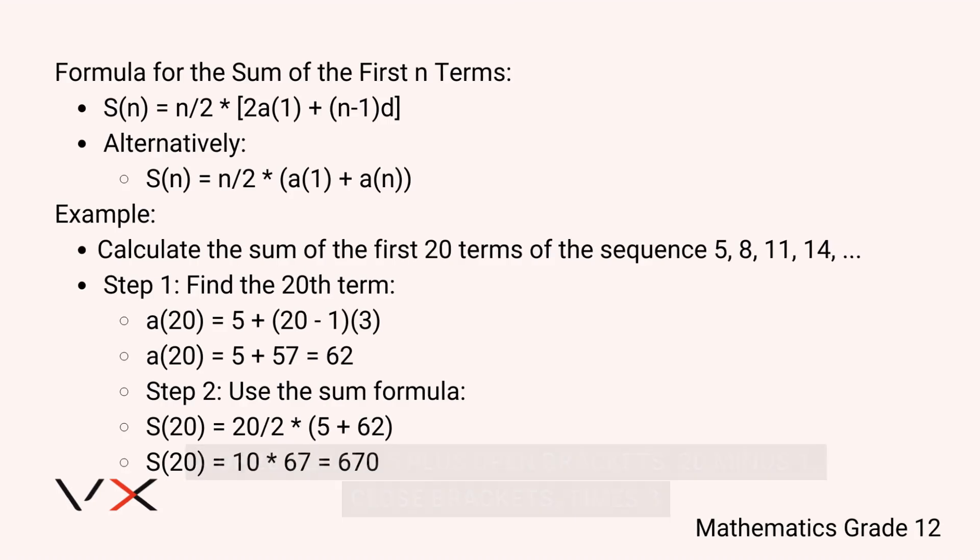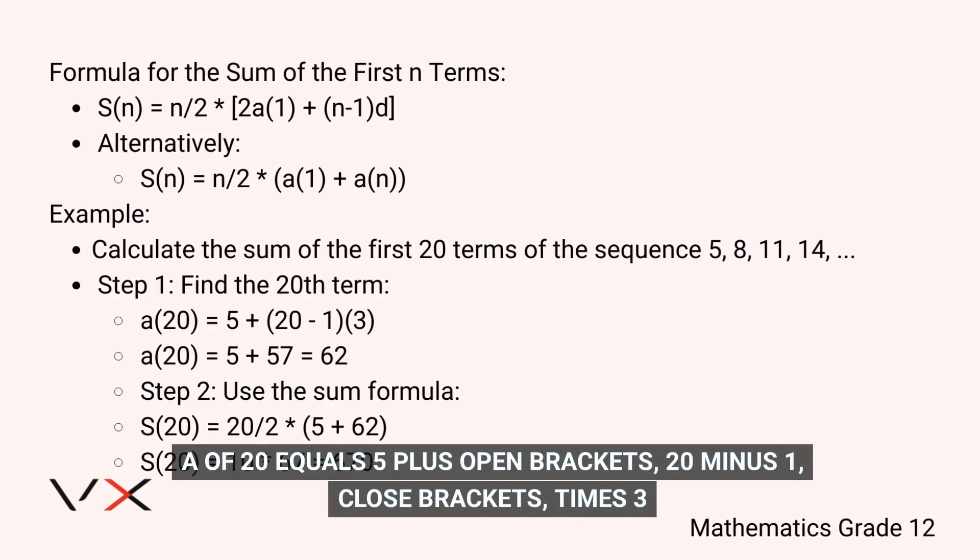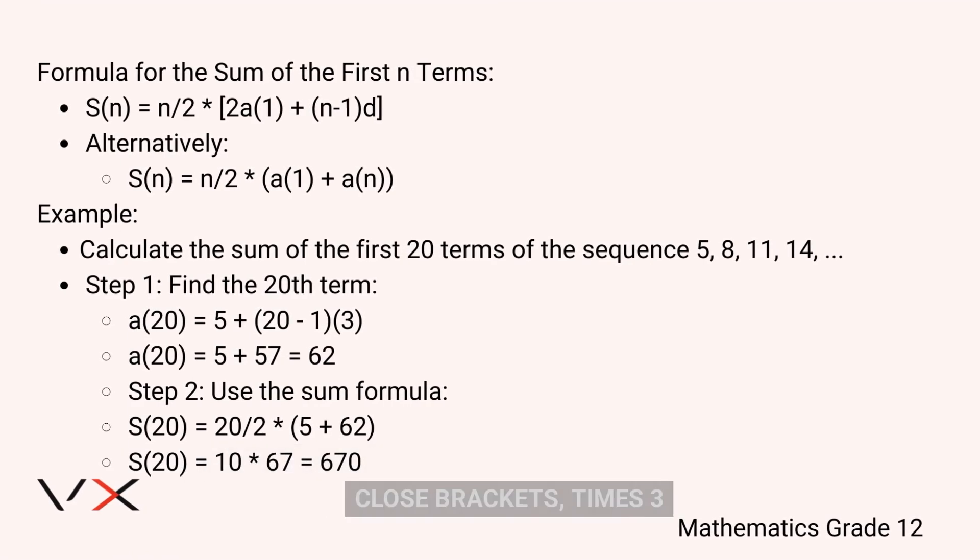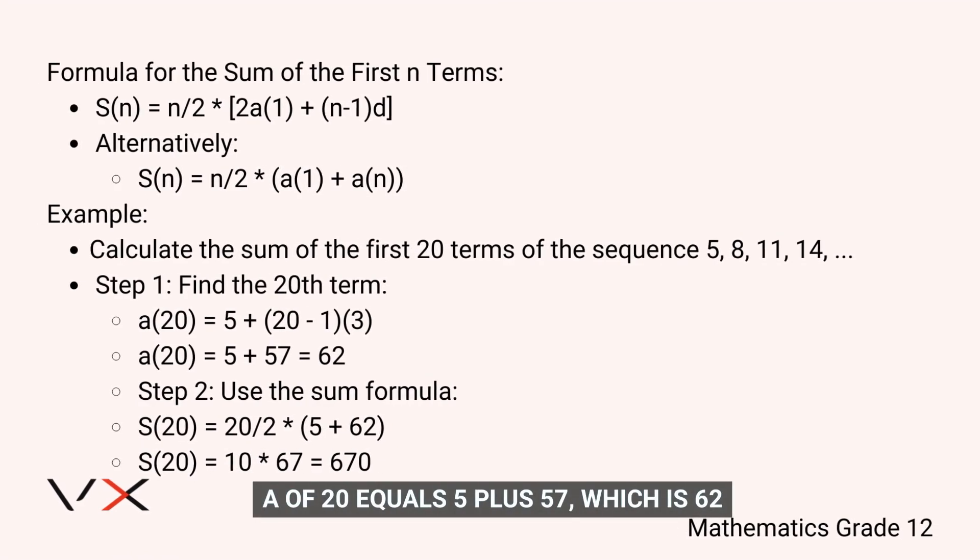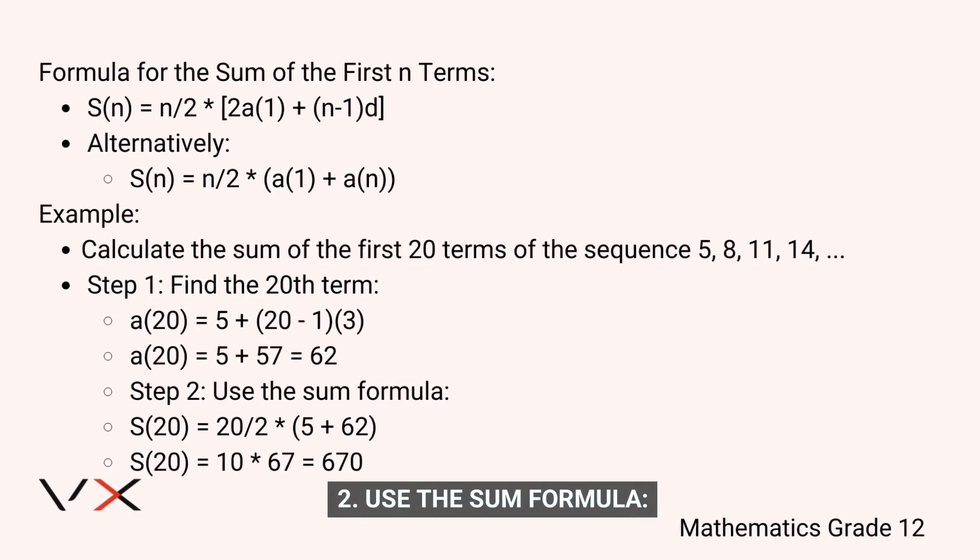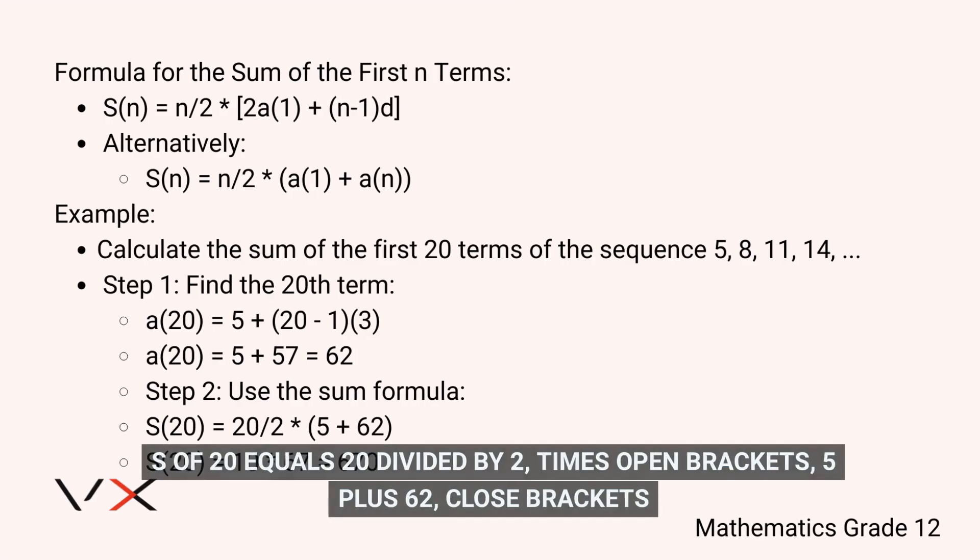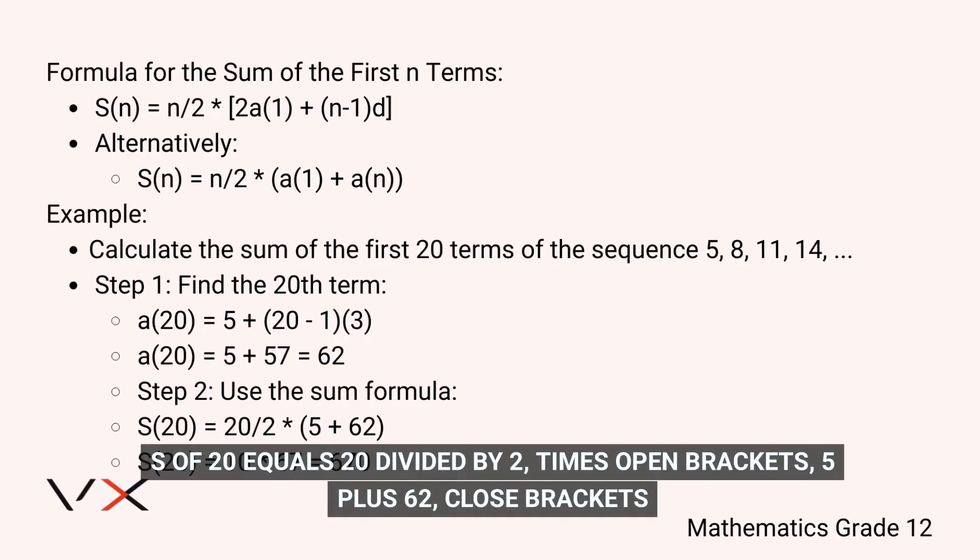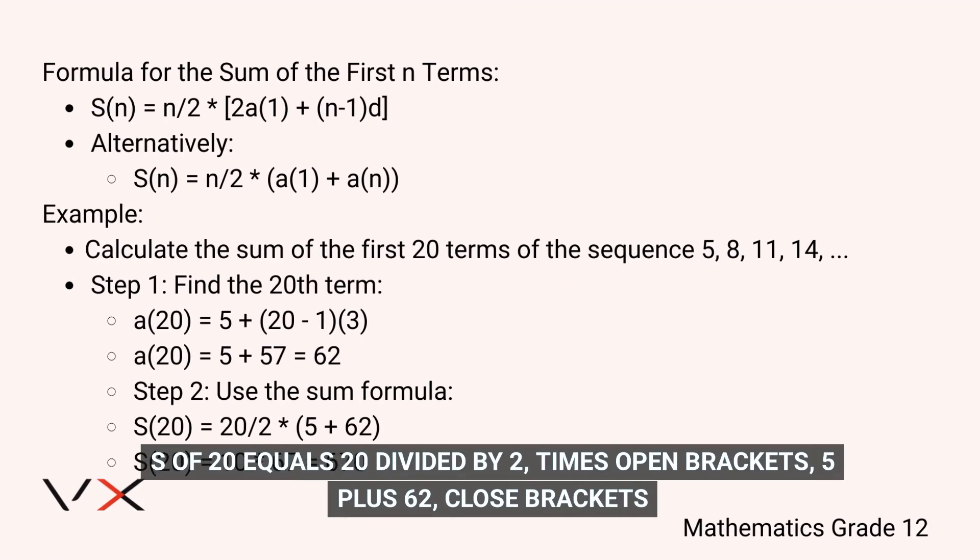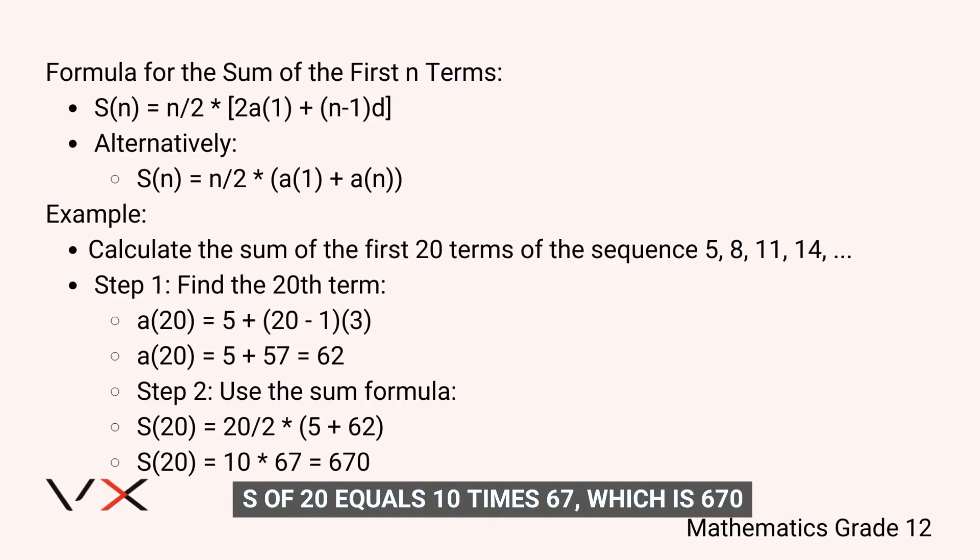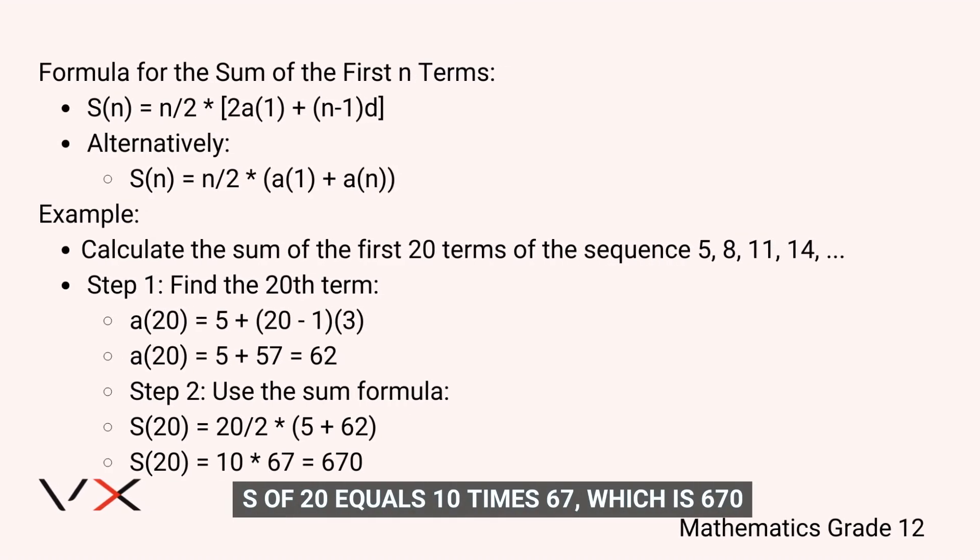Find a(20): a(20) = 5 + (20-1) × 3. a(20) = 5 + 57, which is 62. Step 2: Use the sum formula. S(20) = 20/2 × (5 + 62). S(20) = 10 × 67, which is 670.